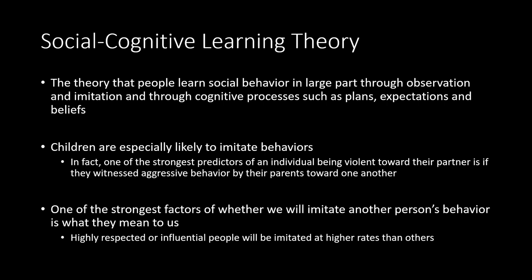Moving on to how we learn to be aggressive — this often falls under the social cognitive learning theory. This is the theory that we learn aggressive or altruistic behaviors through two different mechanisms: first, through imitation of those we see around us, and second, through cognitive processes about the evaluation of those behaviors and the plans and expectations we form around them.